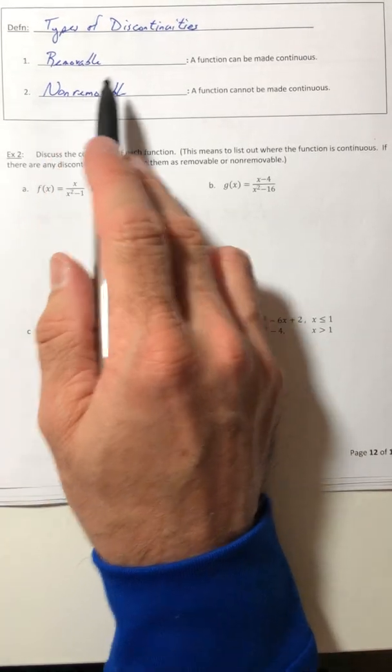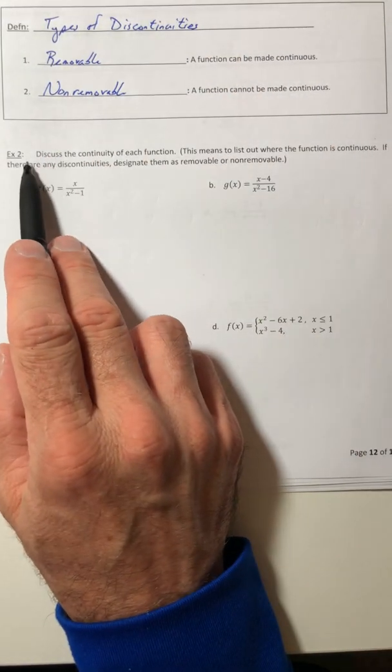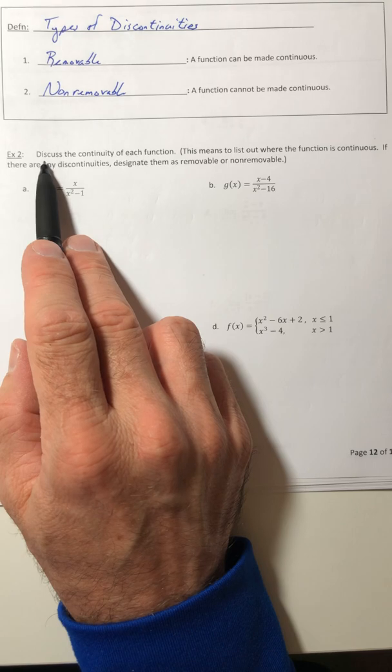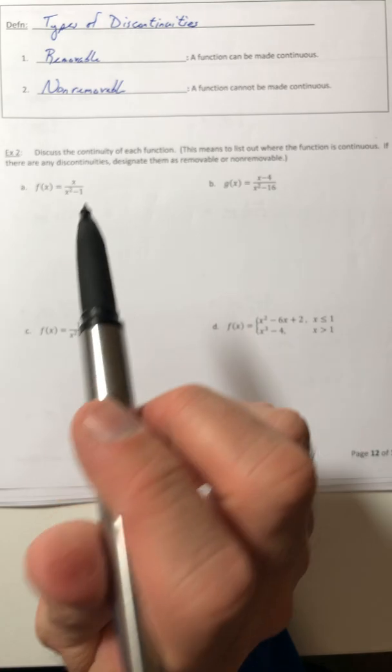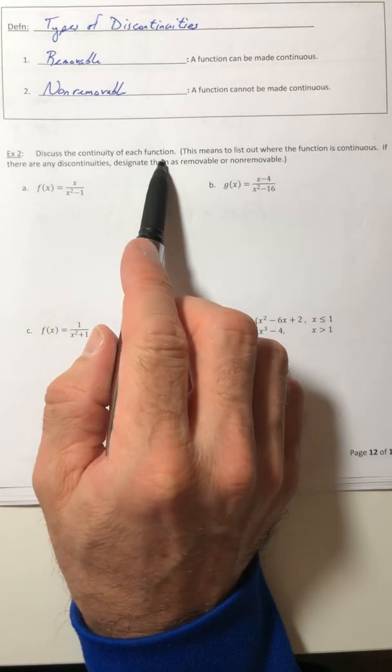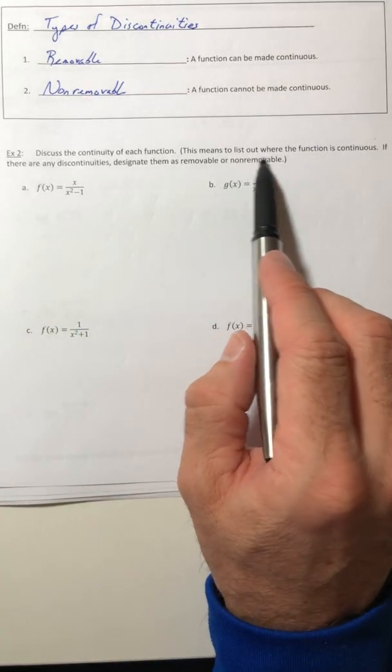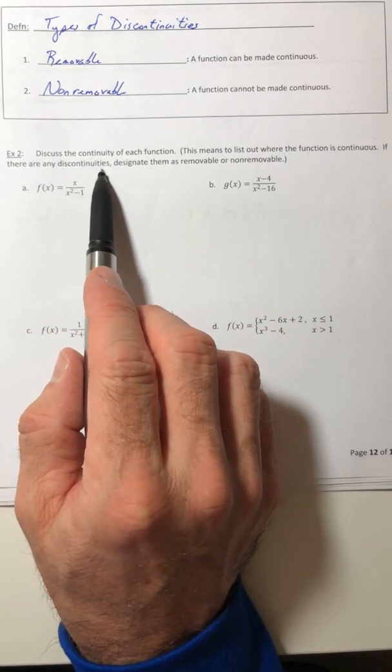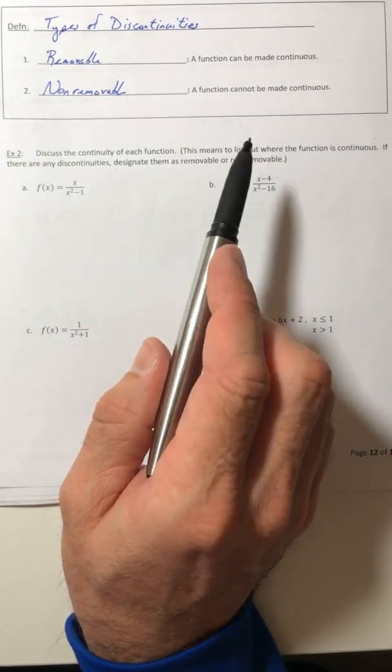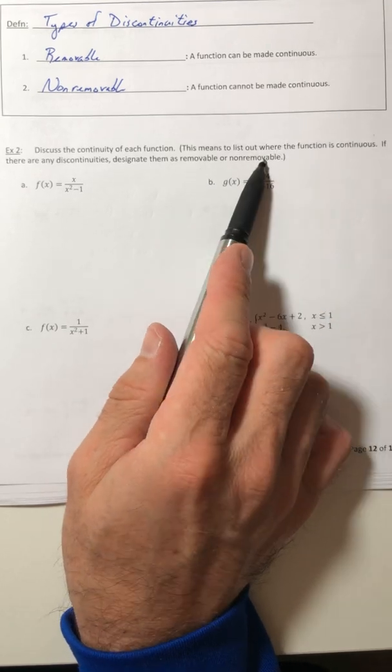Now that we've defined them, when you come across a problem that says discuss the continuity of each function, what they're telling you to do by discussing it, that means you have to list out where the function is continuous. And if there are any discontinuities, designate them as removable or non-removable.